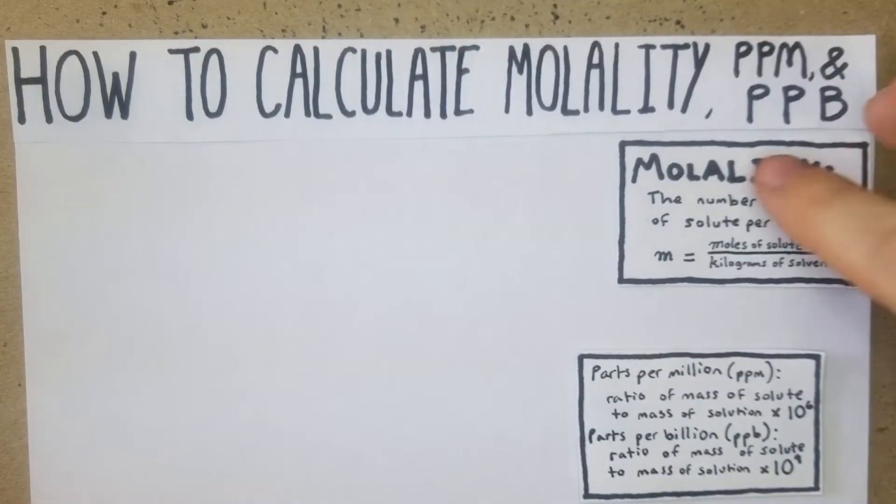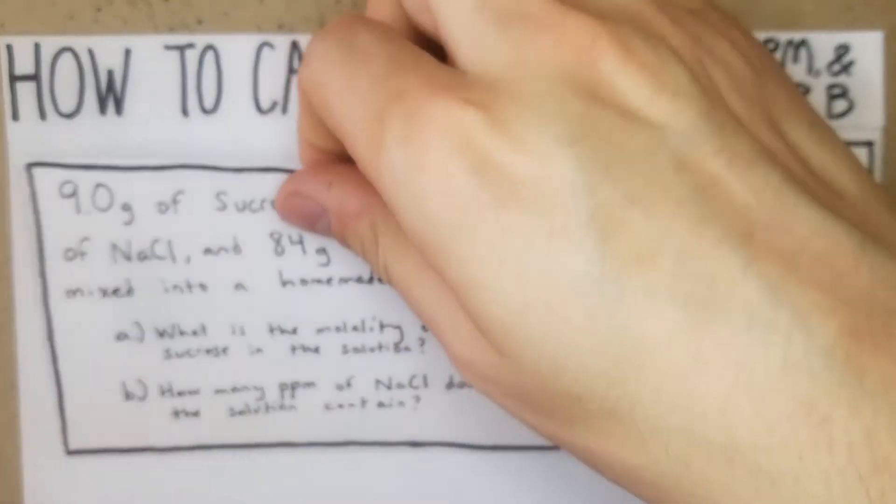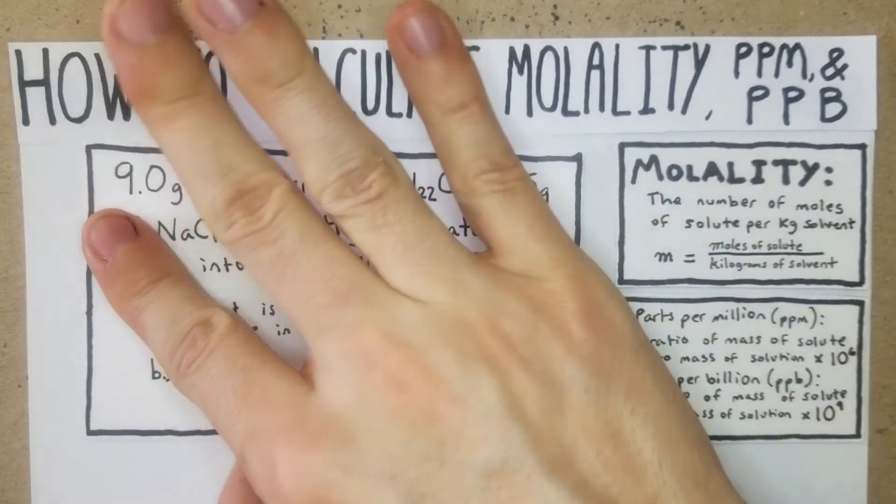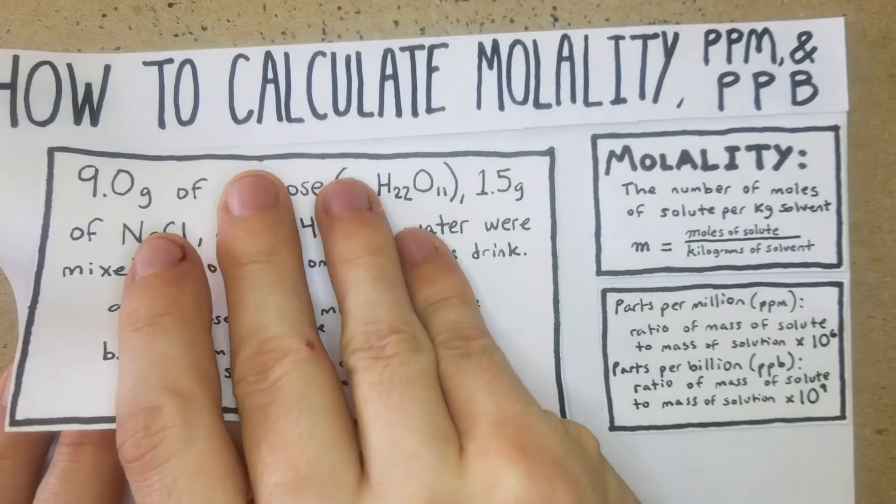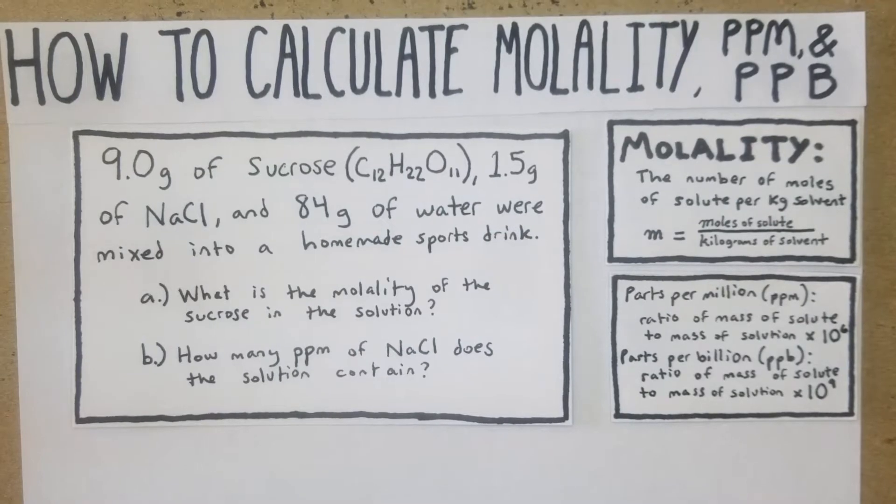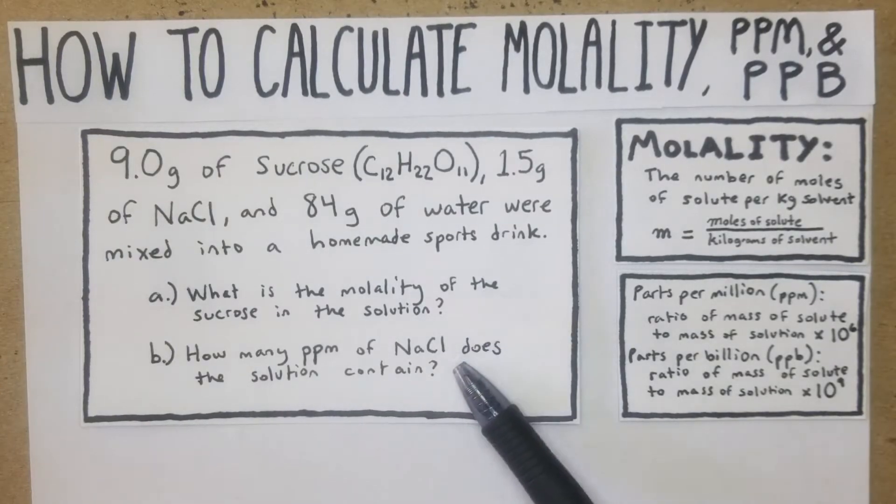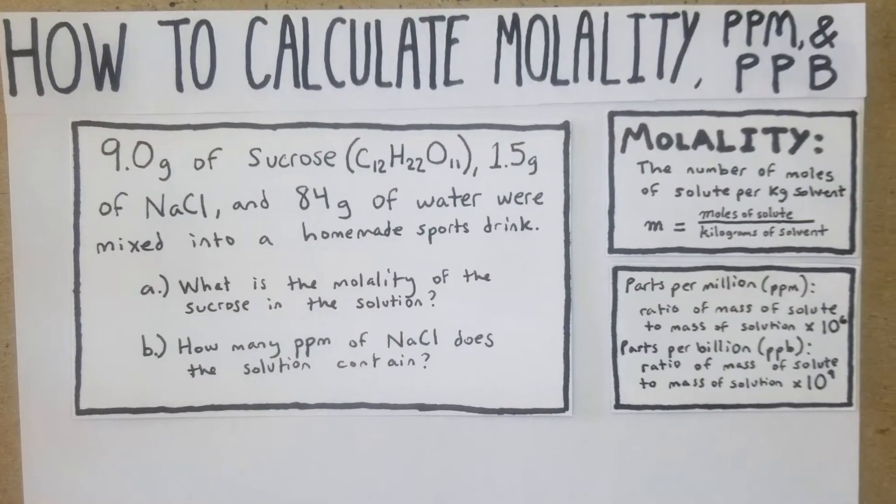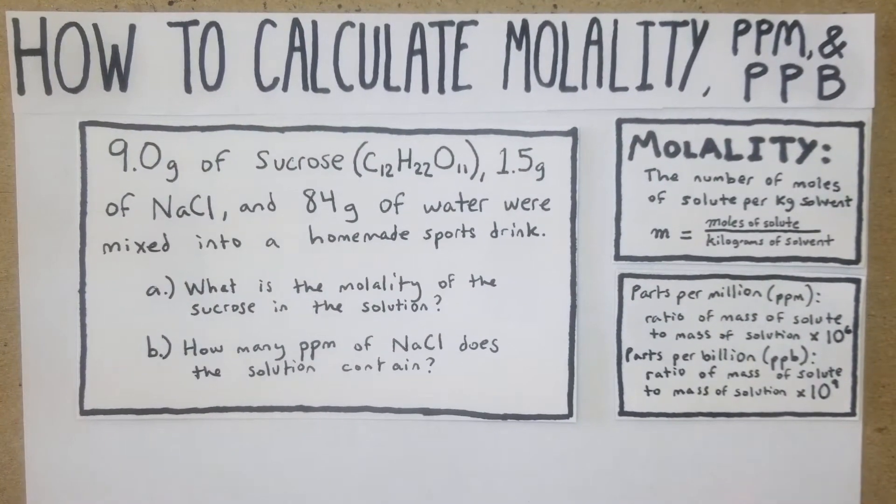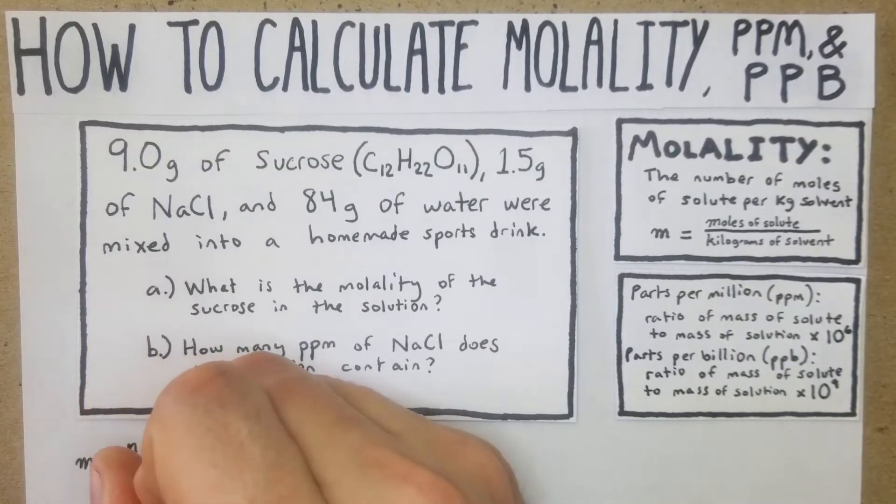All right, here we go. We have 9 grams of sucrose (C₁₂H₂₂O₁₁), 1.5 grams of NaCl, and 84 grams of water, mixed into a homemade sports drink. Part a: what is the molality of the sucrose in the solution? Part b: how many ppm of NaCl does the solution contain? The best way is to start with what we have, using the molality formula: n of solute divided by kg of solvent.